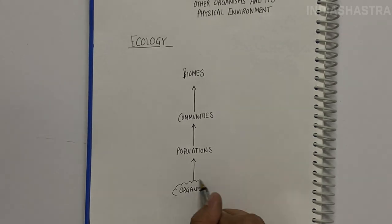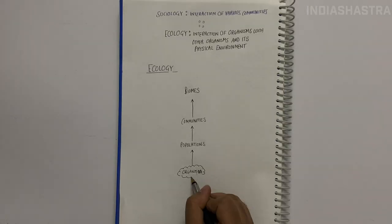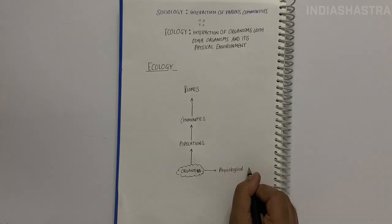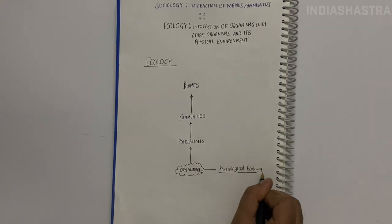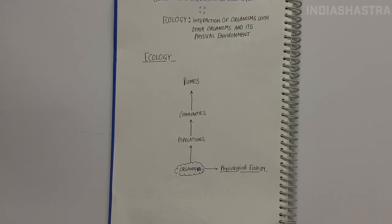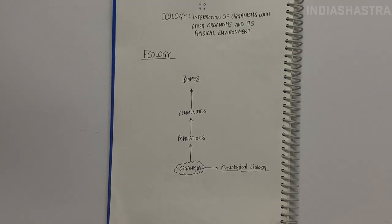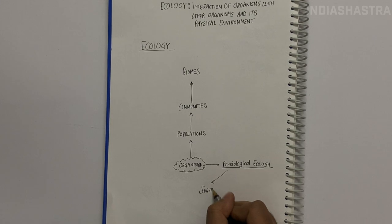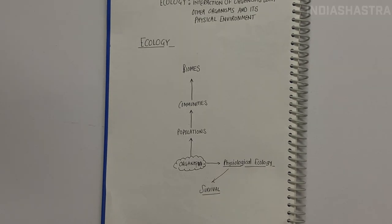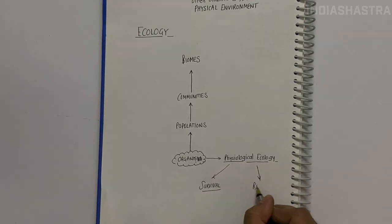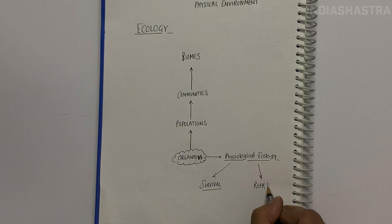Ecology at the organismic level — the first level — is essentially physiological ecology, which tries to understand how different organisms are adapted to their environments in terms of not only survival but also reproduction.